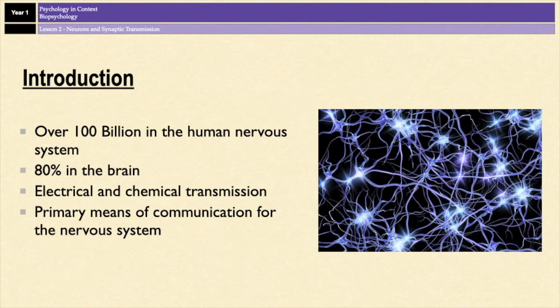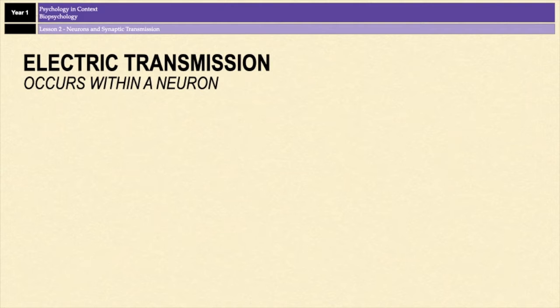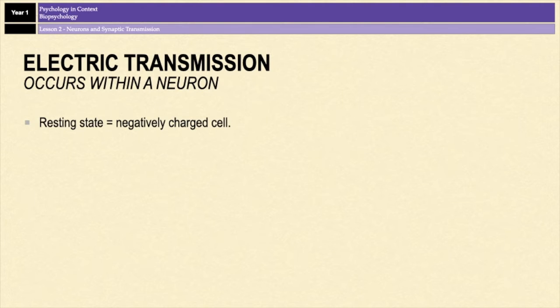Neurons are nerve cells that process and transmit messages through electrical and chemical signals. There are over 100 billion neurons in the human nervous system and 80% of those are located in the brain, and they provide the primary means of communication for the human nervous system. Inside a neuron, information is transmitted via electrical impulses. When a neuron is in a resting state, the inside of the cell is negatively charged compared to the outside.